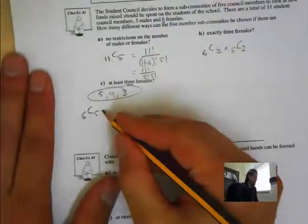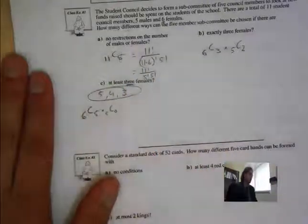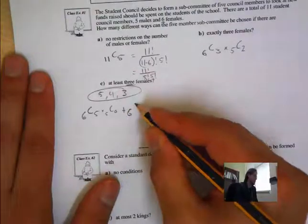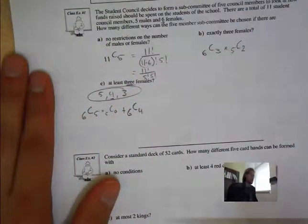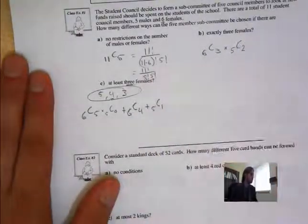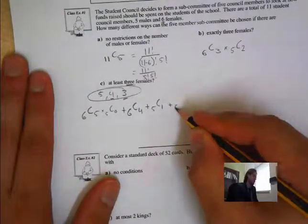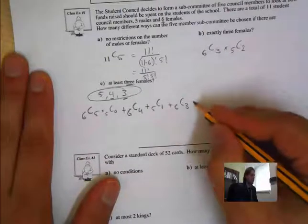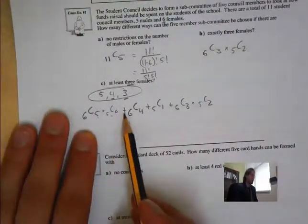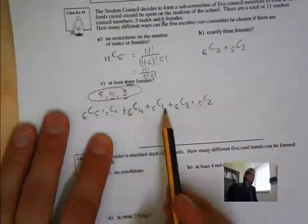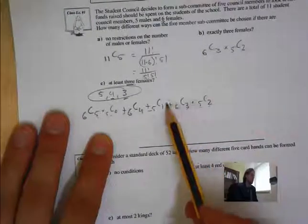The next option is out of 6 females, we're choosing 4 — and that means there must be 1 male, so out of 5 males, we're choosing 1. And the very last option is 3 females: out of 6 females, we choose 3, and out of 5 males, 2 are chosen. So we have: 6C5 × 5C0, or 6C4 × 5C1, or 6C3 × 5C2. These are always multiplied within each case, and always added between cases.